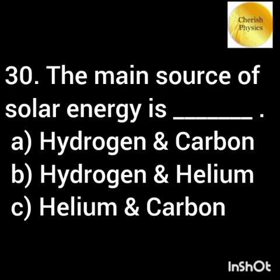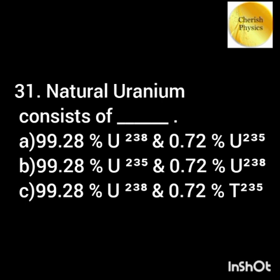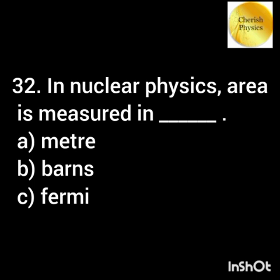The main source of solar energy is nuclear fusion. Natural uranium consists of U-235 and U-238. In nuclear physics, area is measured in terms of barns.